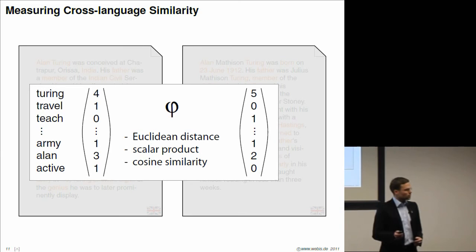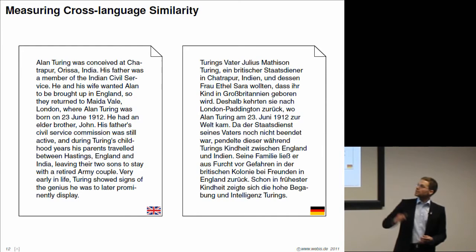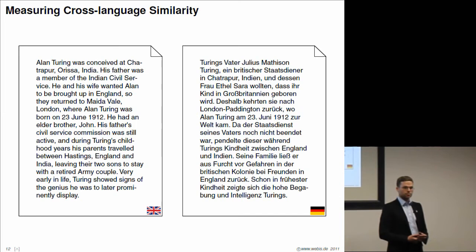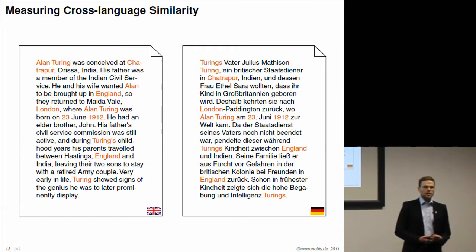Now, consider these two documents. One is written in English, the same as before, but one is written in German, but still about the topic Alan Turing and also about his childhood and youth. If we again highlight the overlapping words, you'd notice there are much fewer words which overlap. And if you look closely, there are only named entities like people, places, or times.